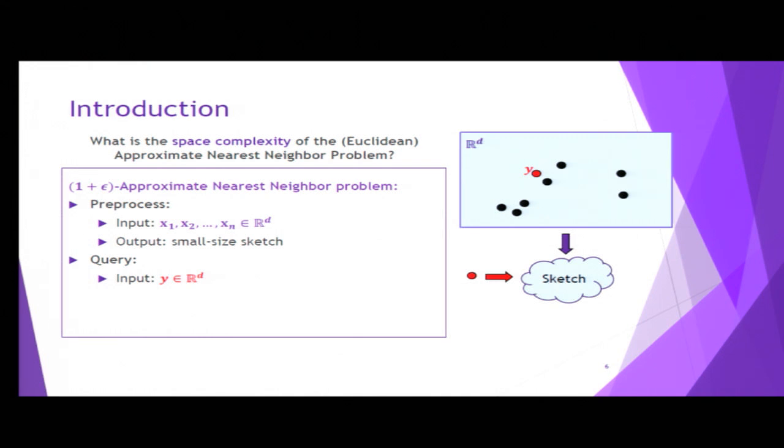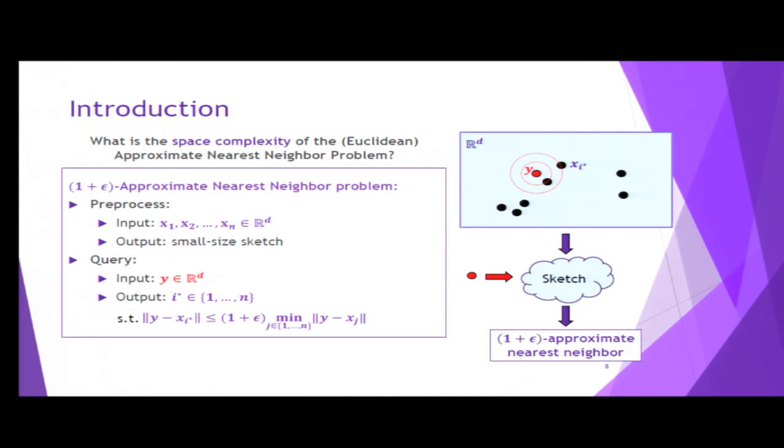The goal is to report an approximate nearest neighbor for that point from the sketch, which is a point that doesn't have to be the closest data point to y, because we allow approximation, but it needs to be almost as close as the closest point. This is the approximate nearest neighbor problem.